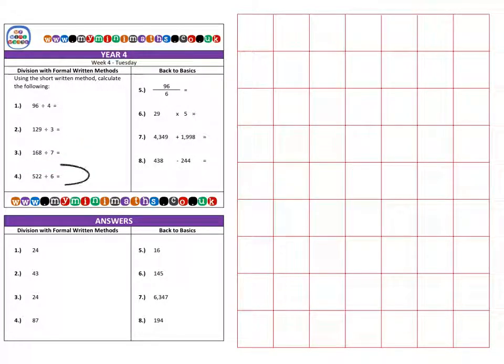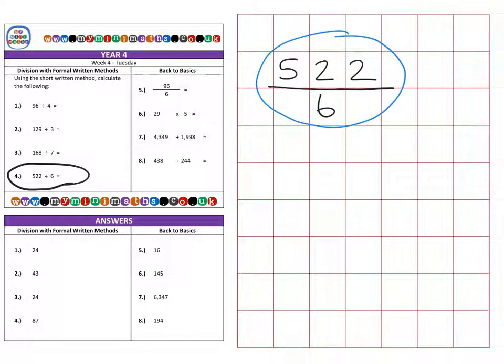Finally for today, we're on to question four, which is 522, and we're going to divide this by six. So just remember if we have a fraction like this, all it means is 522 divided by six. It's just another way of showing or writing a division question.